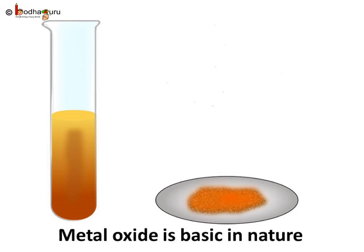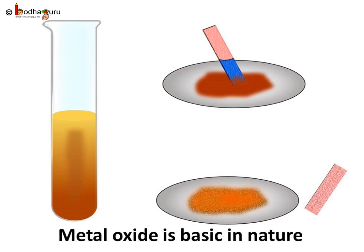For this, collect some rust and dissolve it in very little water. Shake the suspension well. If we dip a red litmus paper in the solution, it will turn blue. A basic solution turns red litmus into blue colour — this means the solution is basic in nature. So we can say metal oxide is basic in nature.